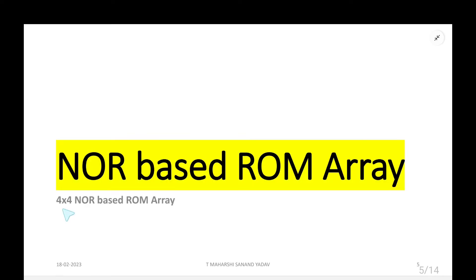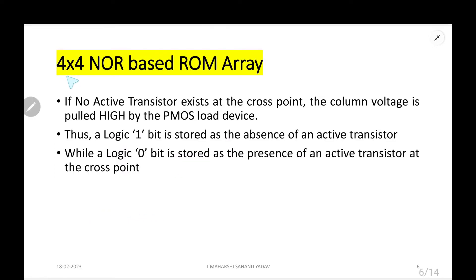Now let us try to understand what is a 4x4 NOR-based ROM array. Key points to know: if no active transistor exists at the cross point, the column voltage is pulled high by the PMOS load device. Logic 1 bit is stored as the absence of an active transistor, whereas logic 0 is stored as the presence of an active transistor at the cross point.